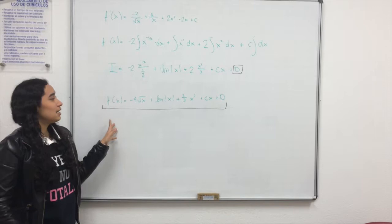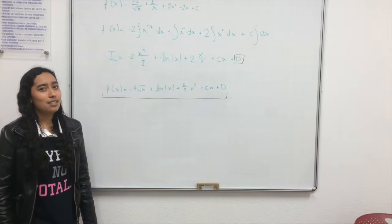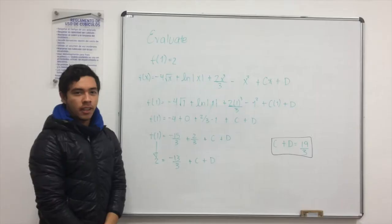So now we just simplify and rewrite it, and we get that the function of x is minus 4 square root of x plus natural logarithm of the absolute value of x plus 2 thirds of x cubed plus cx plus d.